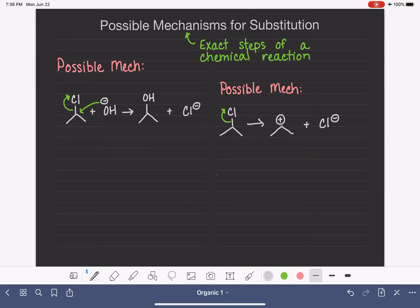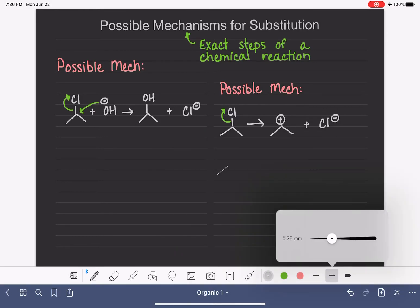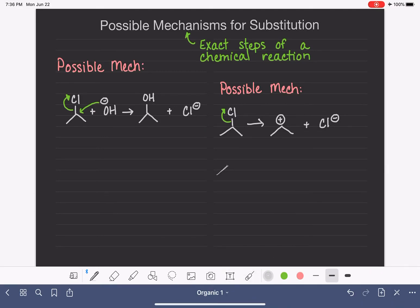And then that carbocation performs the second step with the hydroxide ion. So here we are forming the oxygen-carbon bond, and this is just taking place over two different steps. So it's still getting us to the same product, starting with the same reactants. But it's happening in a series of steps rather than happening all at once.